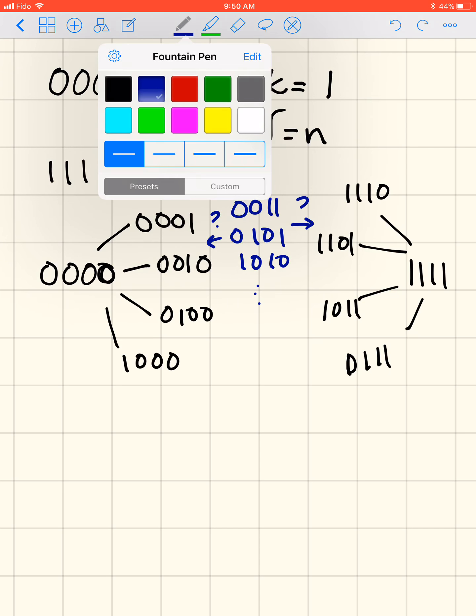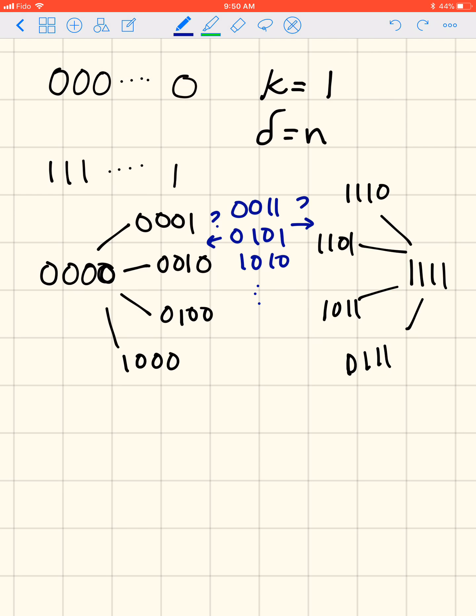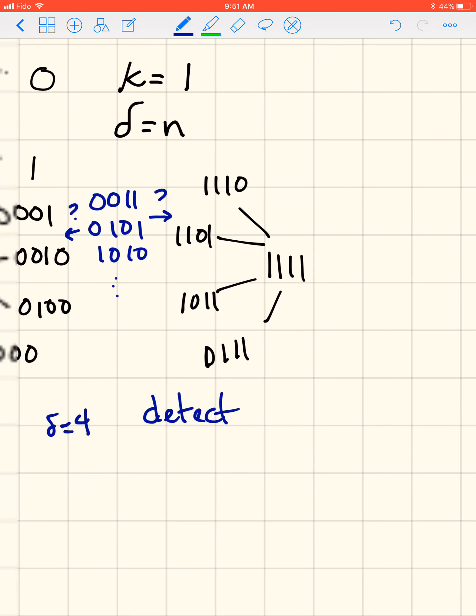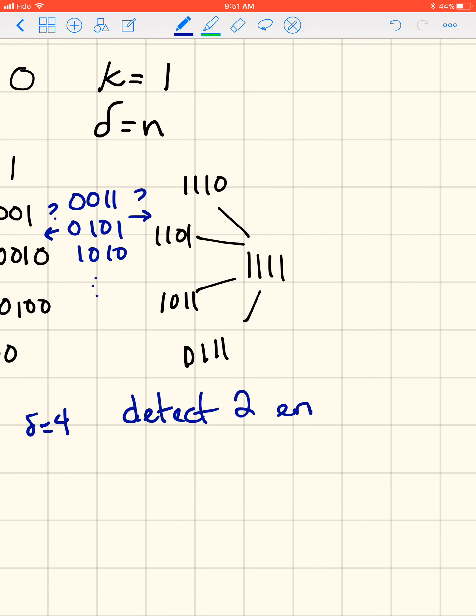So that's why we say that this code has minimum distance 4, and the dimension is 1. Those we know from before. But if we look at how many errors this can correct, we can detect 2 errors because if there are 2 errors, we get 1 of these blue in the middle. But how many can we correct? We can only correct 1 error.